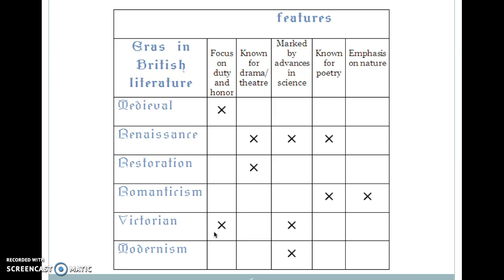For a high school example, here are eras in British literature: Medieval, Renaissance, Restoration, Romanticism, Victorian, and Modernism, each with different focuses during those periods. We might see a focus on duty and honor in medieval and Victorian times; drama and theater in Renaissance and Restoration; advances in science alongside Renaissance, Victorian, and Modernism; Renaissance and Romanticism known for poetry; and Romanticism having an emphasis on nature. This semantic feature chart helps us break it down and get at the concept without as much language, and then we bring in discussion to scaffold what we're talking about.